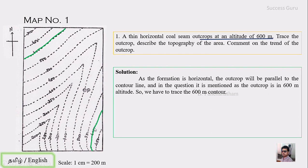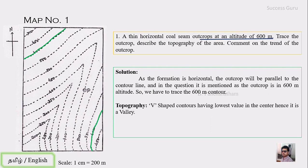Where the 600-meter contour is exposed, the outcrop is exposed. There are two locations on the map where this occurs. To describe the topography: the contours here are V-shaped, and the center of the V is the lowest point. The V-shape contours with the lowest value at the center indicate a valley region.